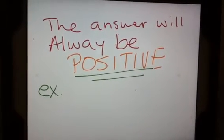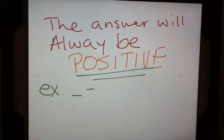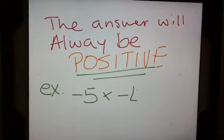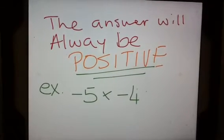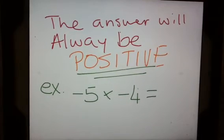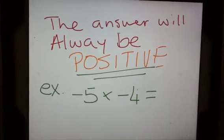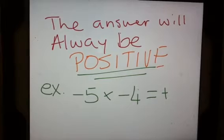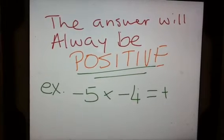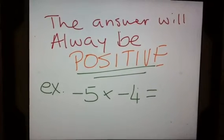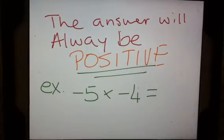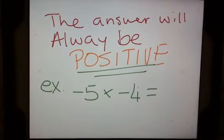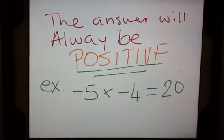For example, if I have negative 5 multiplied by negative 4, I know the sign is always going to be positive — you can put it in or leave it out. And 5 times 4 gives me an answer of 20.